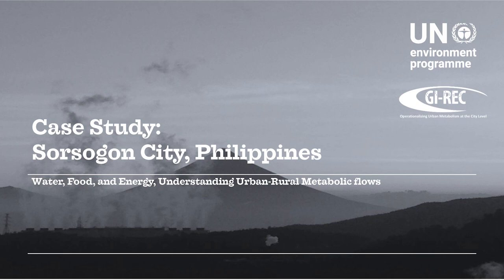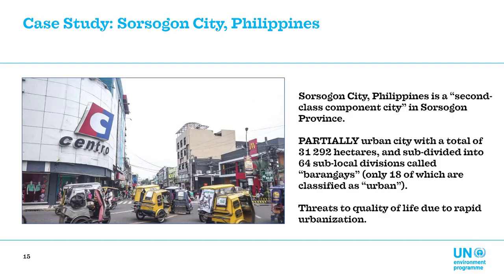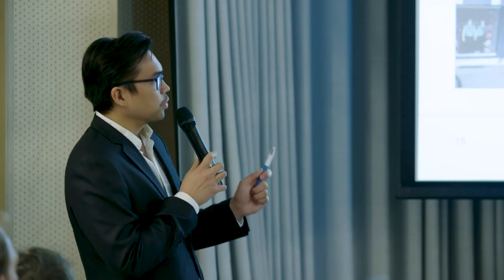The second example moves to a different context: Sorsogon City in the Philippines. Both examples are secondary cities — Recife has about 1.6 million people, while Sorsogon is much smaller at only 170,000. Sorsogon is defined as a second-class component city in the Philippines' classification system based on city income — ranked in terms of local revenue rather than any qualitative judgment.